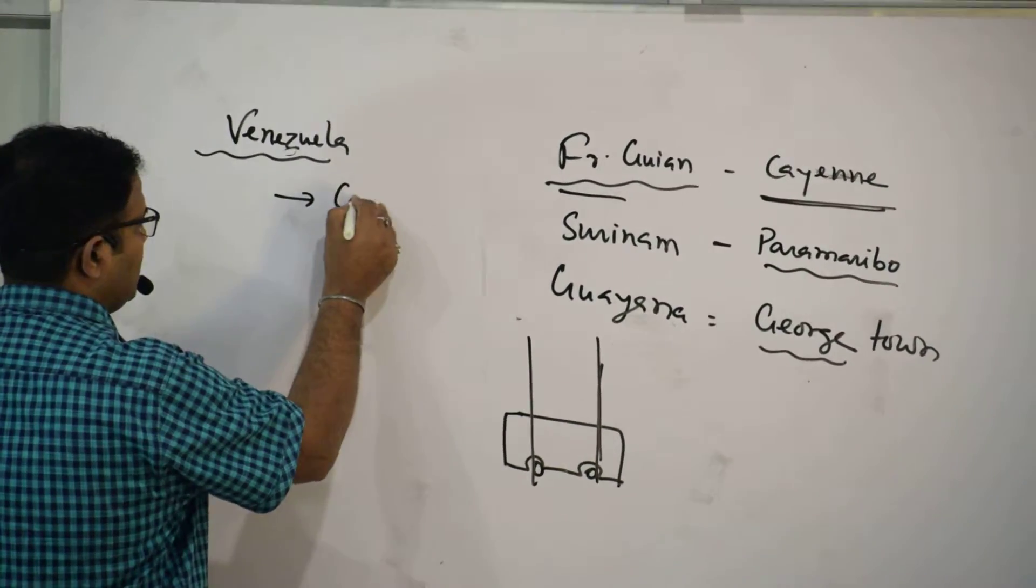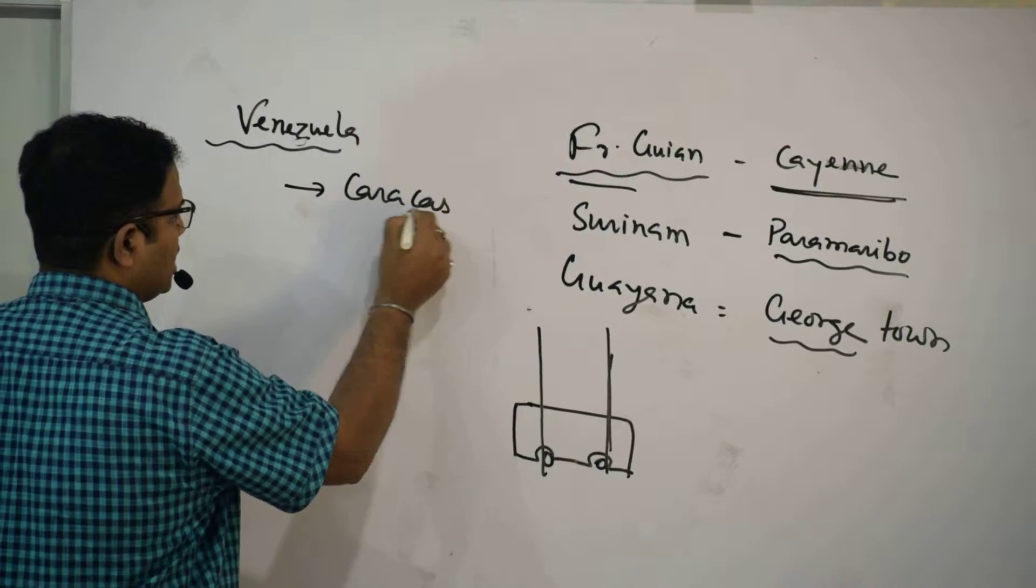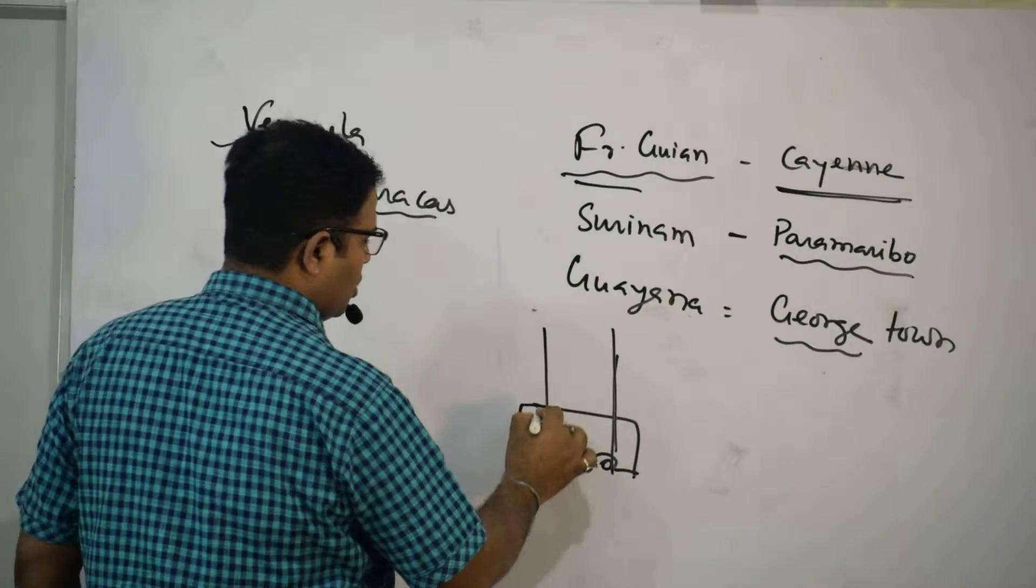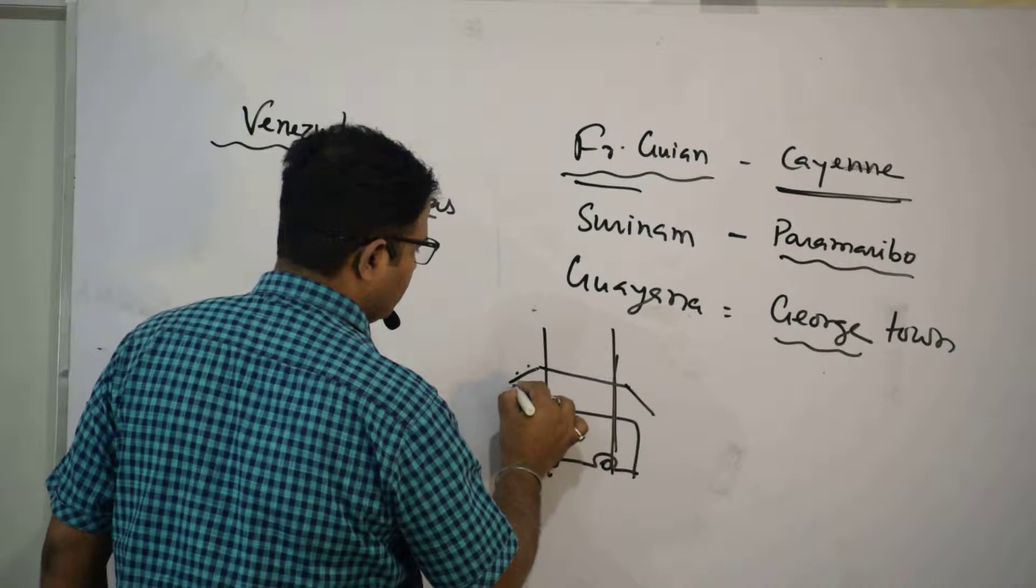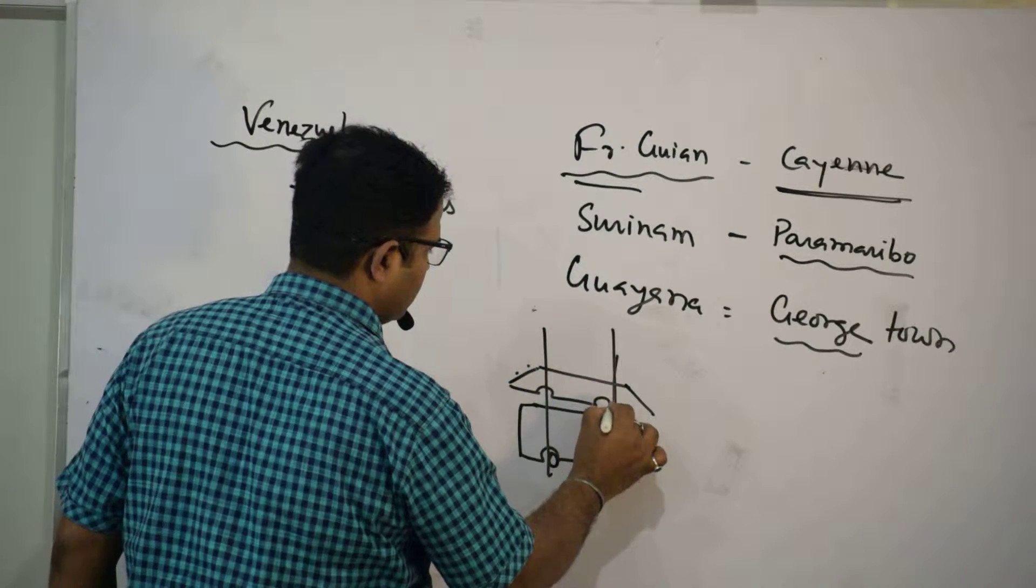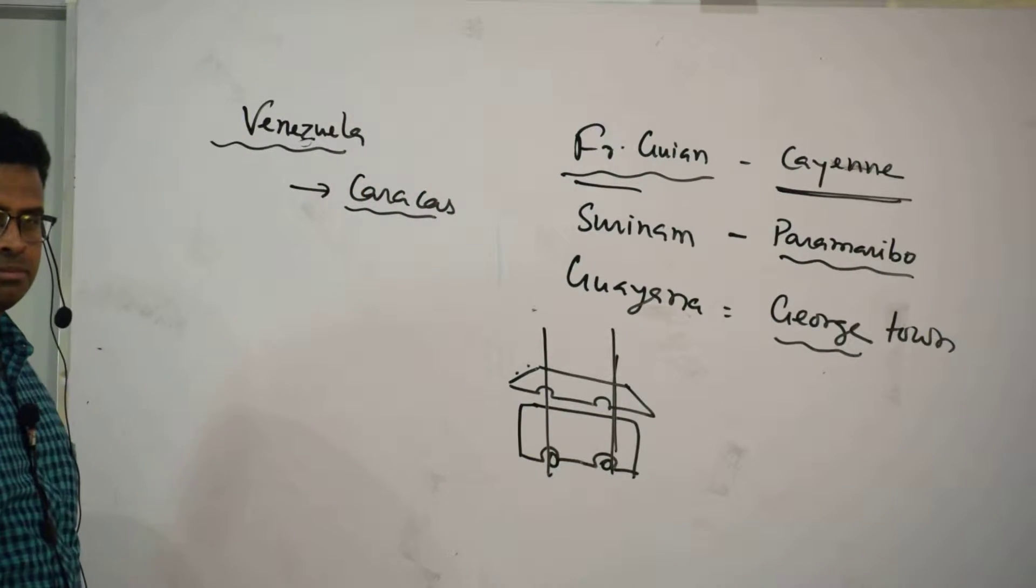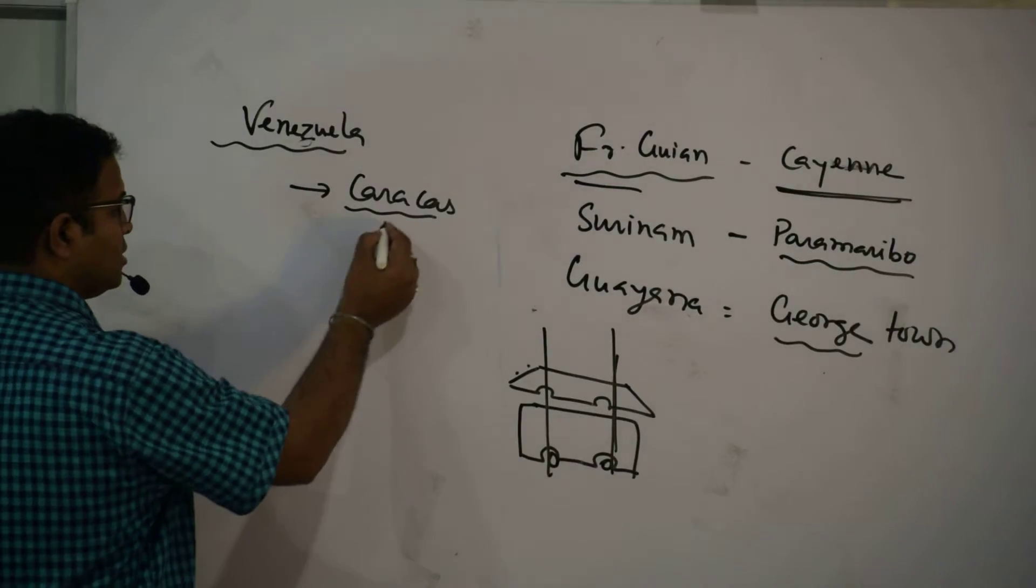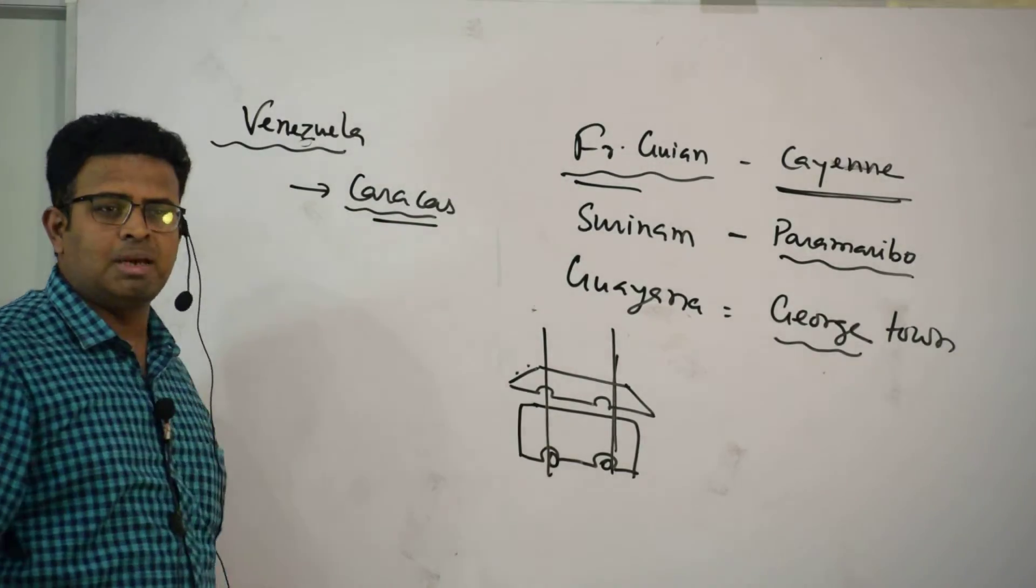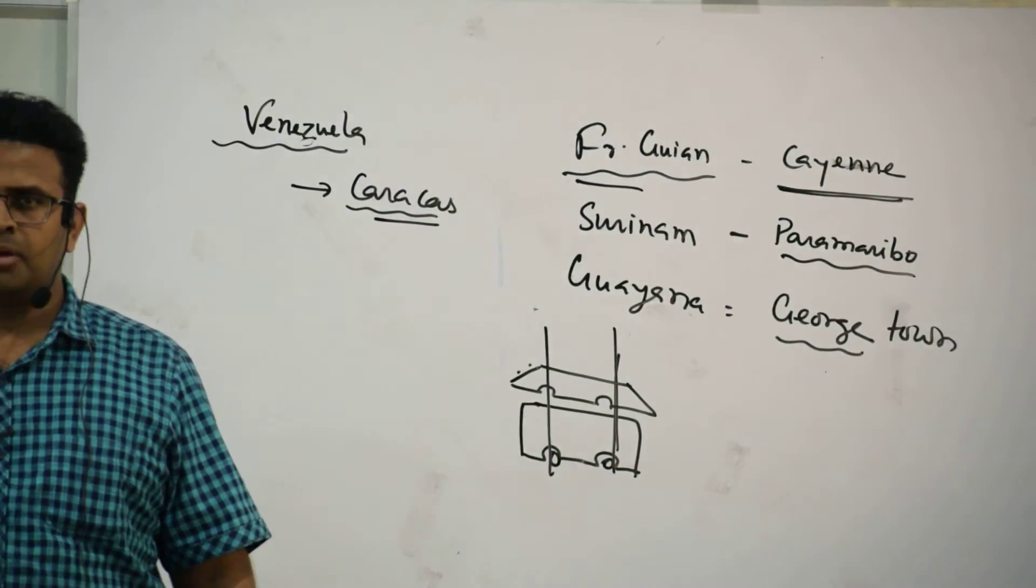And Venezuela capital is Caracas. So what is the capital of Venezuela? Caracas. Caracas.